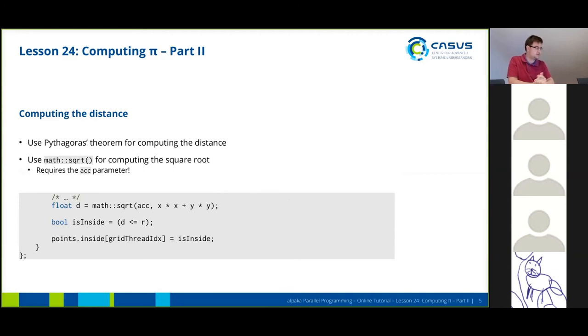Next we're going to compute the distance from a point to the origin. We're going to use Pythagoras for that, and APAKA comes with its own set of math functions. We'll use the math square root function from APAKA. Our math functions require the accelerator parameter. As you can see in the source code, we call the square root function, pass in the accelerator parameter first, and then the value we want to compute.